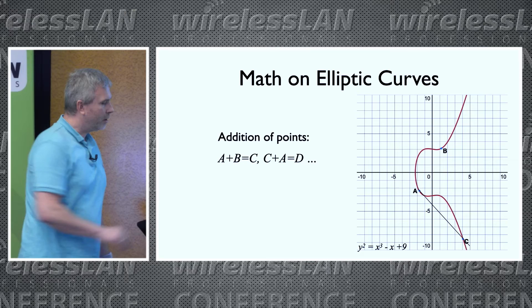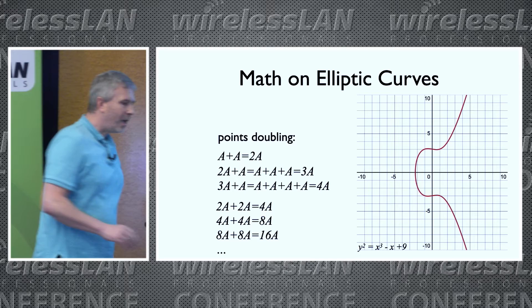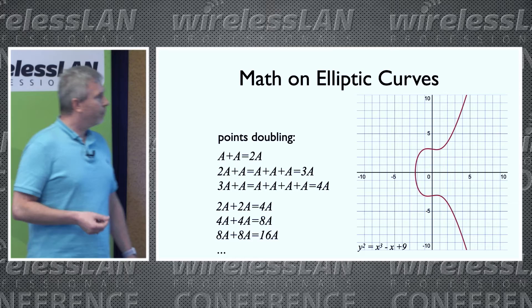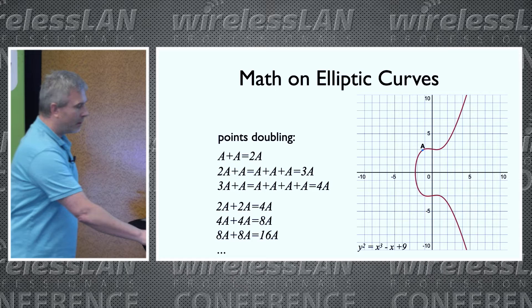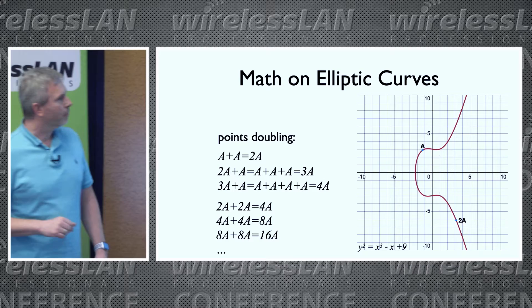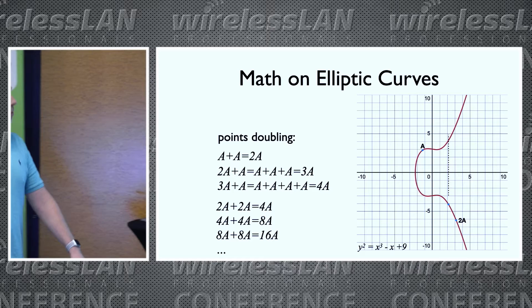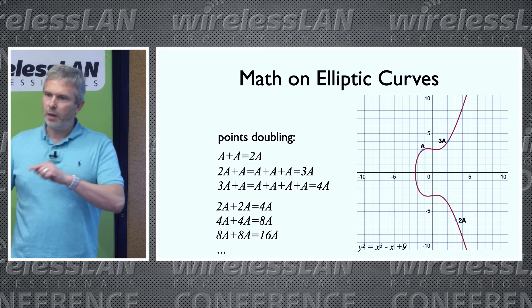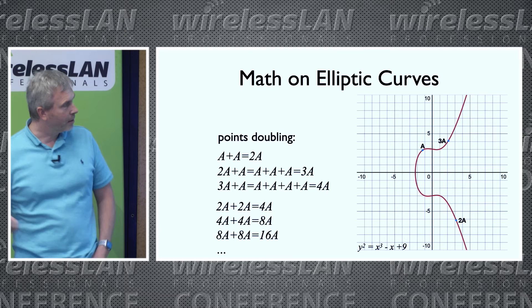We can add point C to point A — same operation — and we get to point D. We also have point doubling, also named multiplication. If we want to add A to itself, the operation is a little bit different. We take the point and draw a tangent line on the curve at point A, and it will cross the curve at another point. We reflect this point down and we get to point 2A. We can add A to it to get to 3A. We could also double 2A to get to 4A, and double 4A to get to 8A.